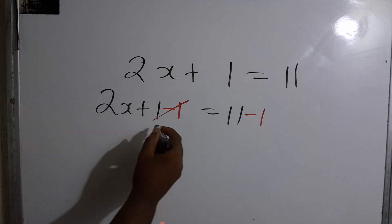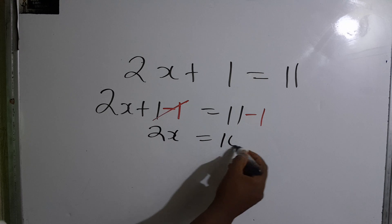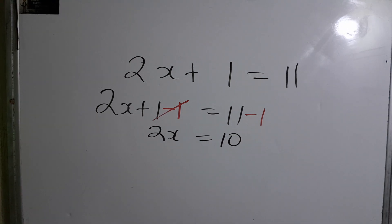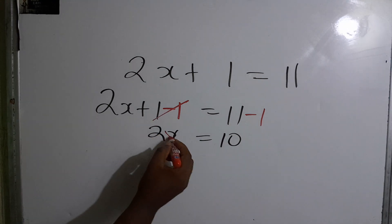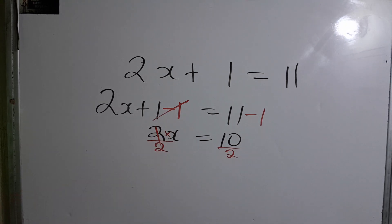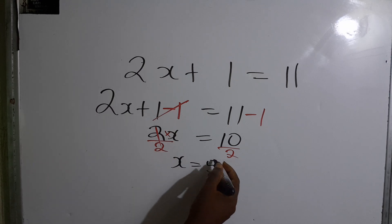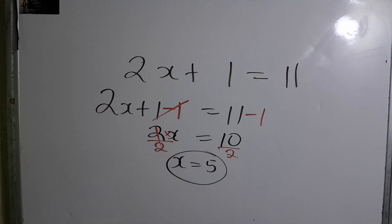This would give us now 2x is equal to 11 minus 1 which is 10. And the final step is to take the opposite of times which is to divide by 2. So therefore, x is equal to 5, and that would be our answer.